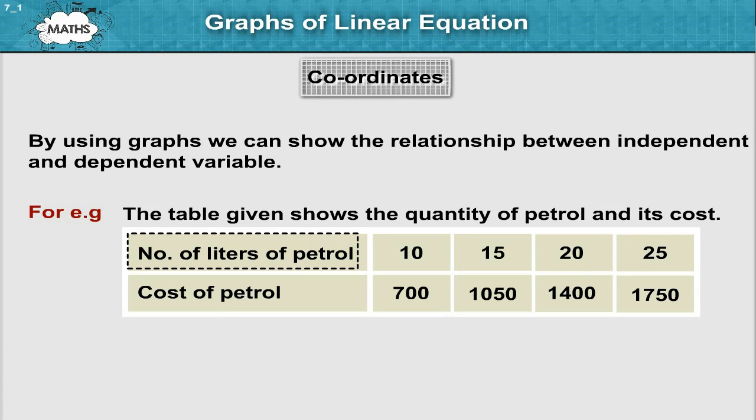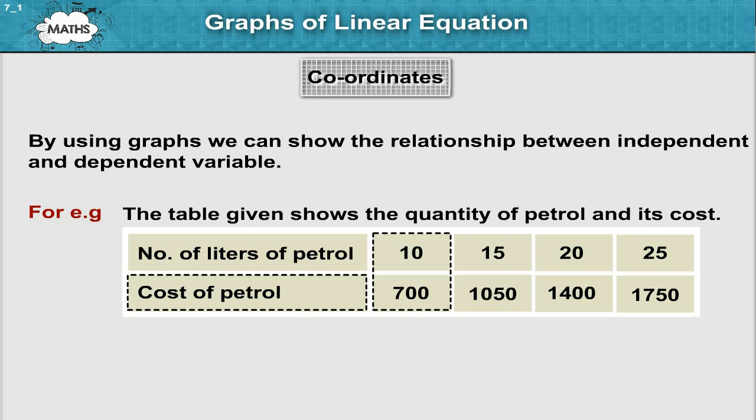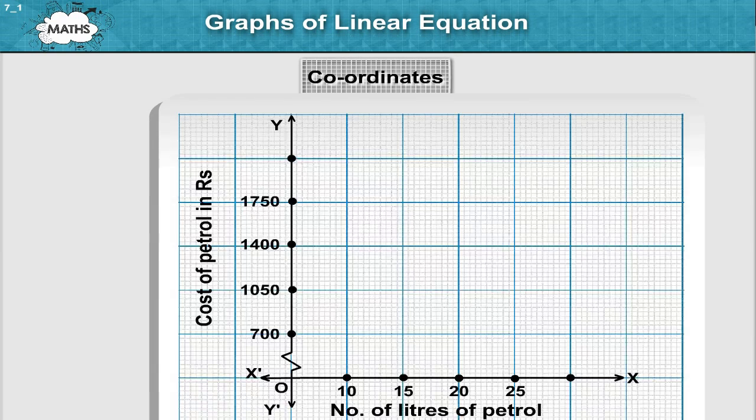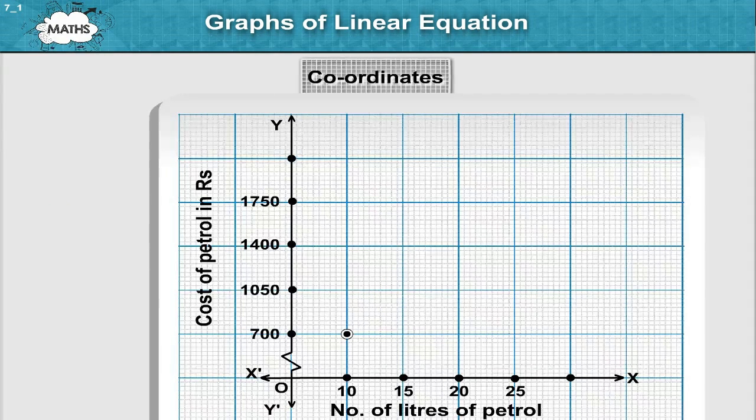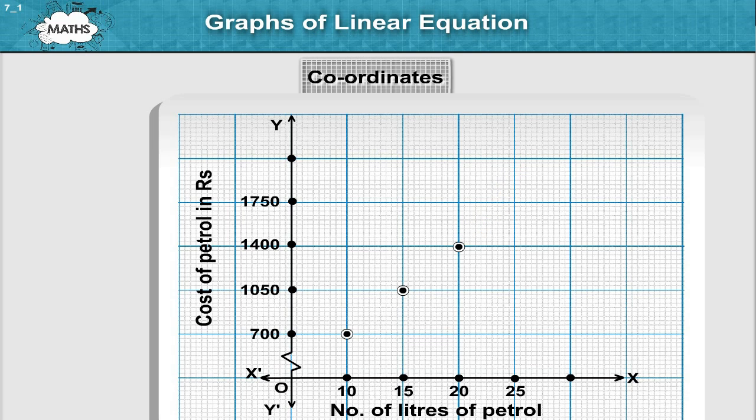Number of litres of petrol: 10, 15, 20, 25. Cost of petrol in rupees: For 10 litres, 700; for 15 litres, 1050; for 20 litres, 1400; for 25, 1750. Its graph can be given by plotting points: 10 and 700, 15 and 1050, 20 and 1400, 25 and 1750.